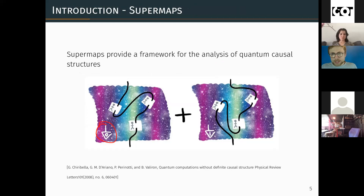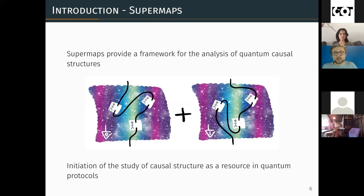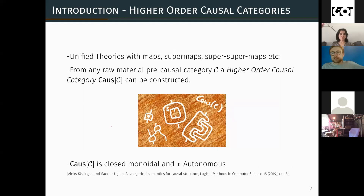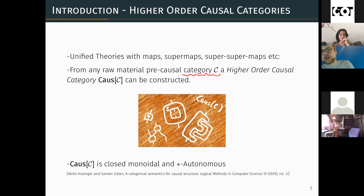So that's the kind of thing we want to model. Once you've started talking about the transformations you can do to processes, why stop there? Why not start thinking about the transformations you can do to those transformations of processes and so on? Once you've thought about super maps, you start thinking about super super maps, etc. We call these unified theories of higher order transformations. There's already a really nice piece of work on putting together a process theory perspective and the notion of a unified higher order theory, in which for many sufficiently well-behaved raw material process theories, the notion of a higher order causal category can be constructed.